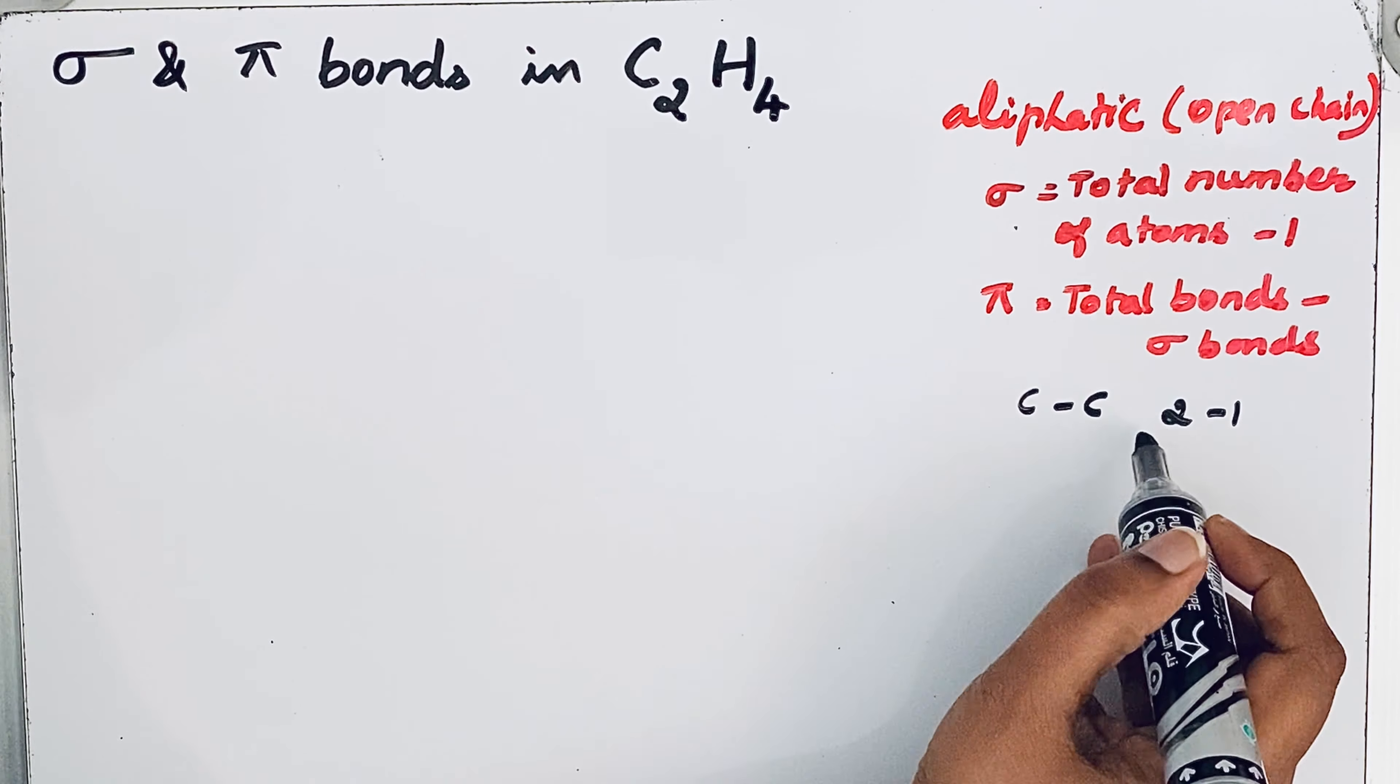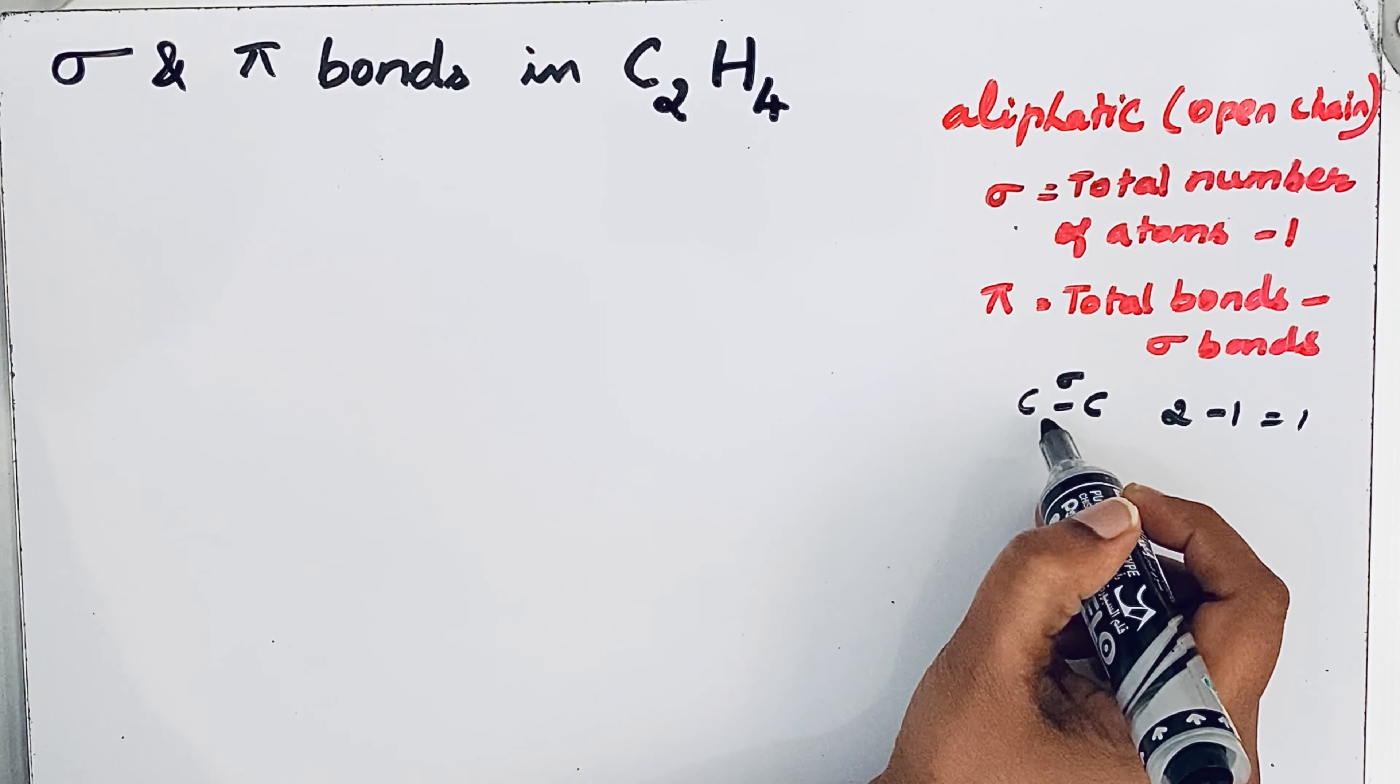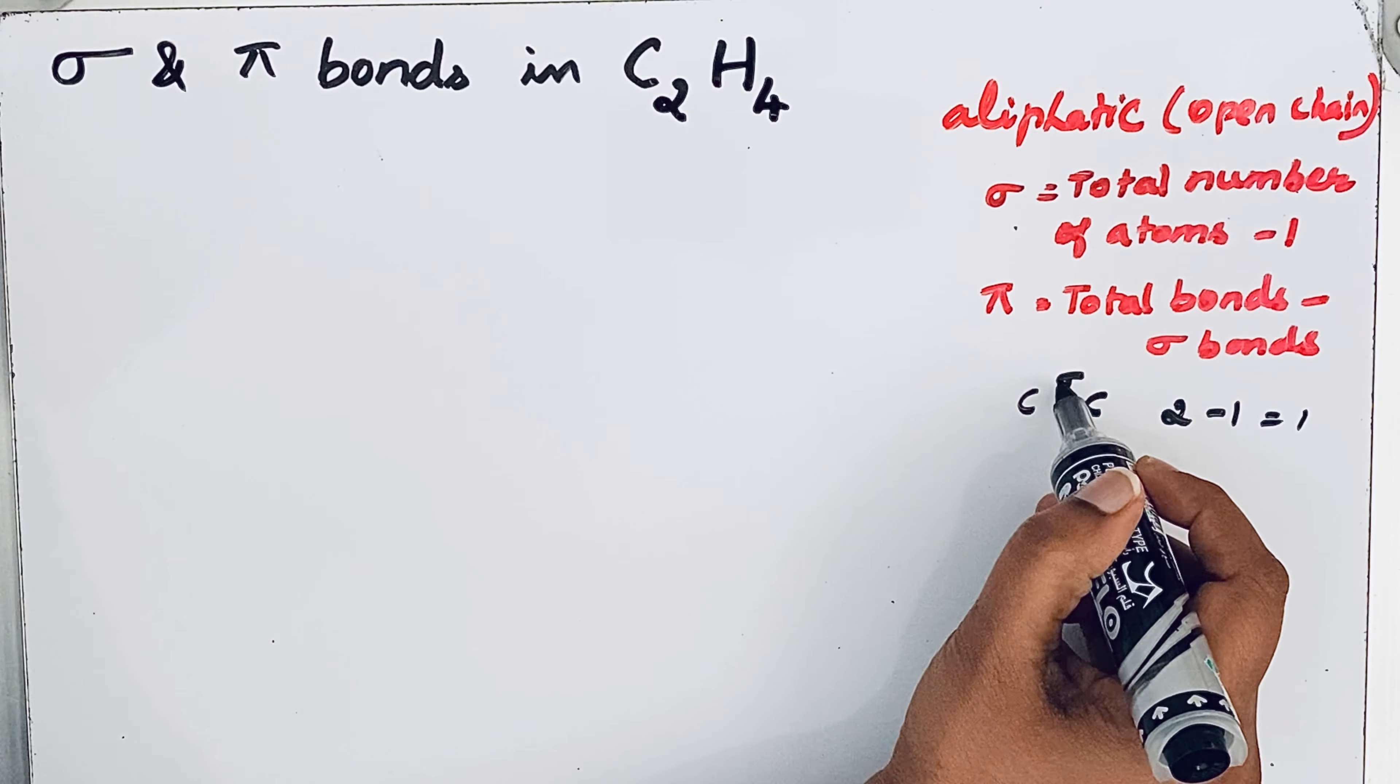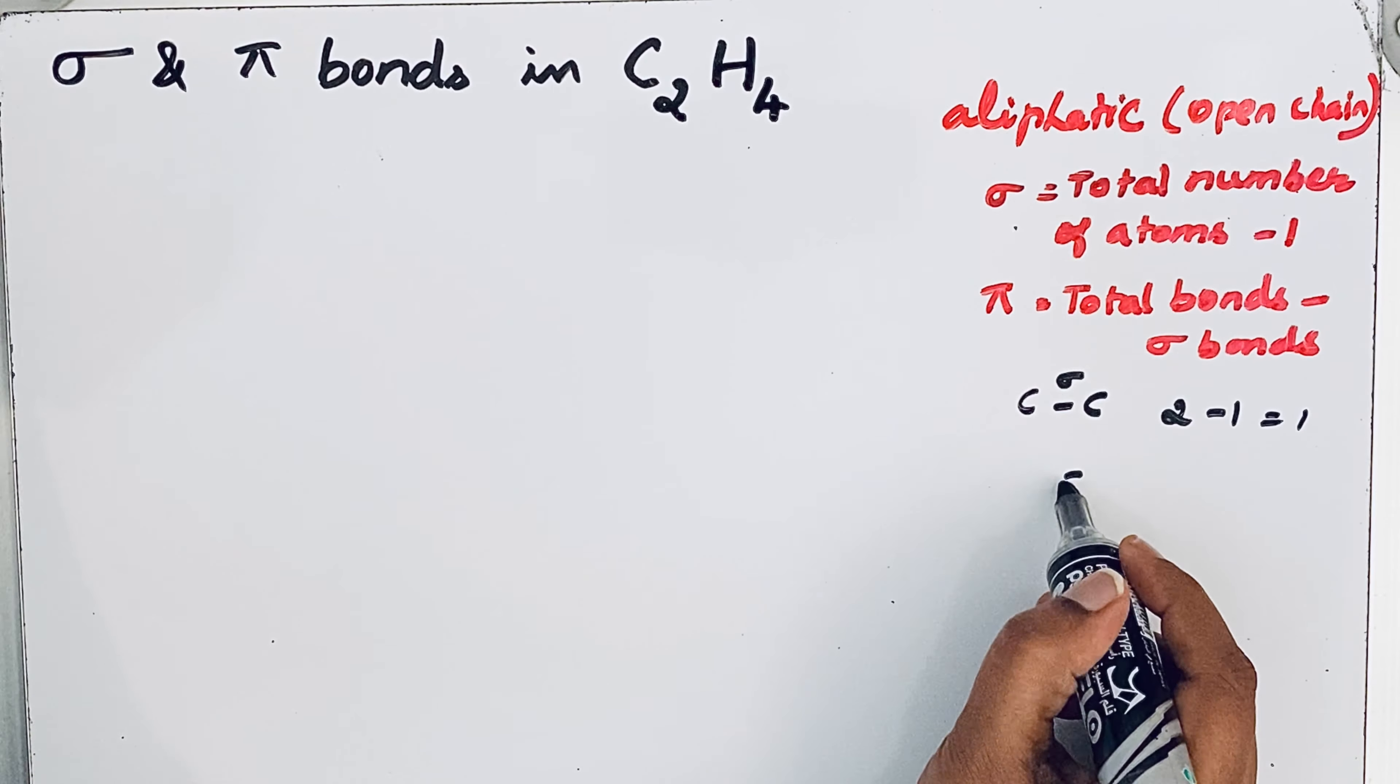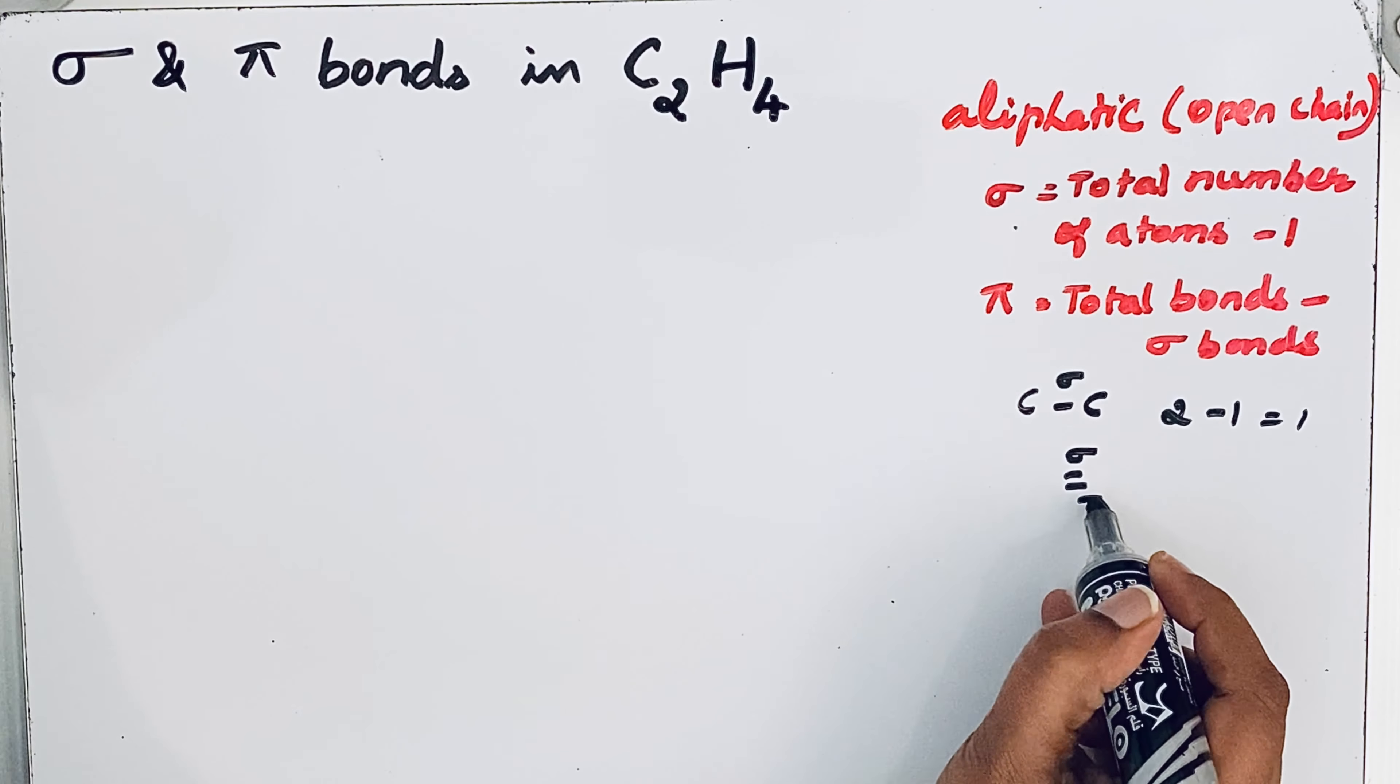That means the number of sigma bonds equals 1. So this is the sigma bond. Wherever we see a single bond, that is the sigma bond. If you see a double bond, then one is a sigma bond and another one is a pi bond.